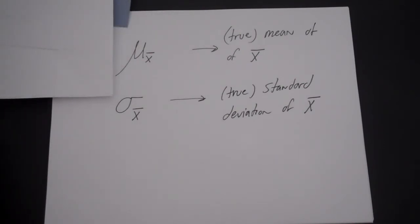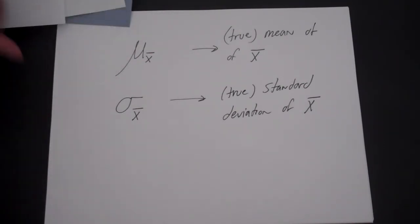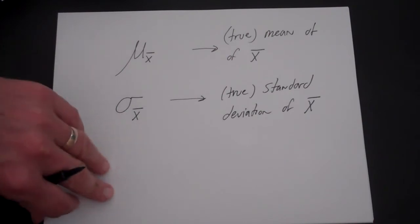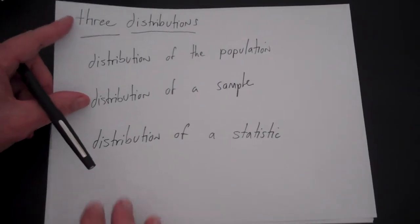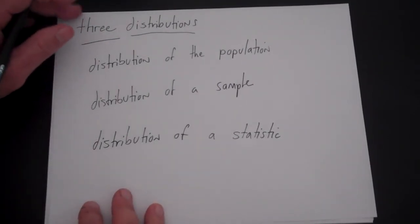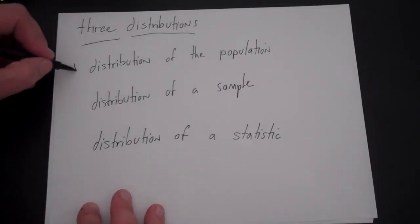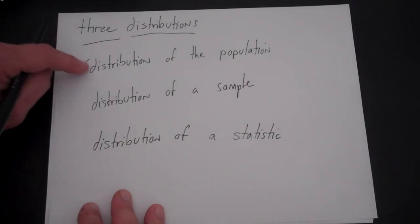A way to think about this is that any time you run a sample, you can really think that there are three different distributions that are going on that are interesting: the distribution of the population as a whole, the distribution within a single sample,